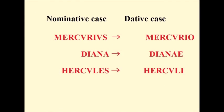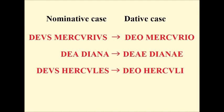The names of the gods are put in the dative case. For instance, Mercurius would become Mercurio, meaning 'to Mercury'. Diana would become Dianae, and Hercules, Herculi. Sometimes 'god' or 'goddess' is added — so, Deo Mercurio, 'to the god Mercury'; Deae Dianae, 'to the goddess Diana'; Deo Herculi, 'to the god Hercules'.